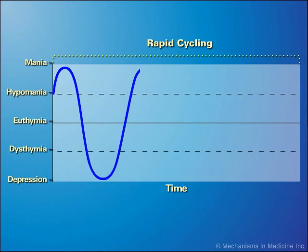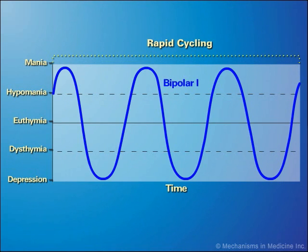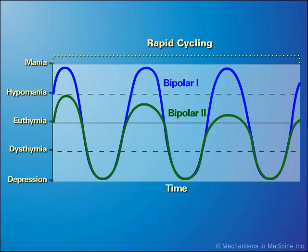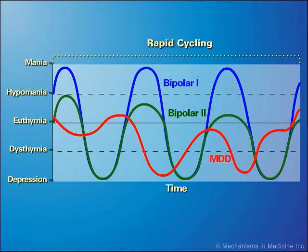Bipolar 1 disorder involves a manic or mixed episode, in contrast to Bipolar 2 disorder, which involves at least one major depressive episode and at least one hypomanic episode, but no full manic or mixed episodes. Bipolar disorder should be differentiated from major depressive disorder, or MDD, which is diagnosed when a patient experiences one or more major depressive episodes without any lifetime episodes of hypomania or mania.